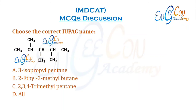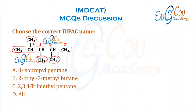The IUPAC name of the given compound: choose the longest chain and start numbering from where the first substituent is closer. The compound has substituents at positions 2, 3, 4 (trimethyl) with a 5-carbon chain (pentane). So the name is 2,3,4-trimethylpentane. C is the correct option.